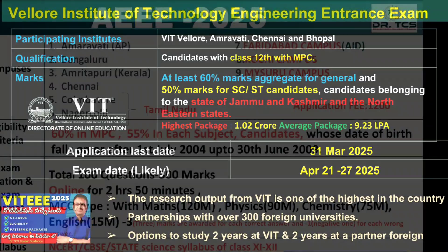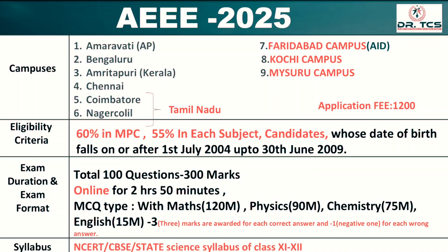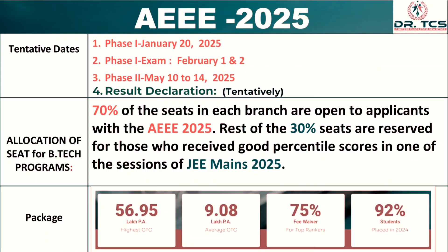The fifth exam is Amrita University, which offers admission across seven campuses: Amaravati, Bengaluru, Amrita Coimbatore, Chennai, Coimbatore, Nagercoil, and Faridabad. They have introduced new courses in artificial intelligence and data science. You need 60% in your qualifying courses. The exam is conducted online with an NCERT-based syllabus. Phase 1 has already been released with January 25th as the last date. Here, 70% of seats are filled through Amrita's own exam and 30% through JEE Mains score. The highest package is 56 lakhs per annum and the average package is 9 lakhs per annum.